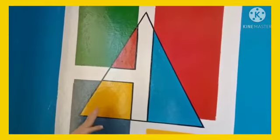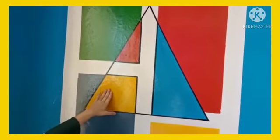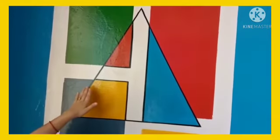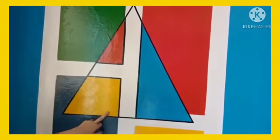Our third shape is triangle. This is a triangle. Three sides. Now let's count it. One, two, three. Three sides.